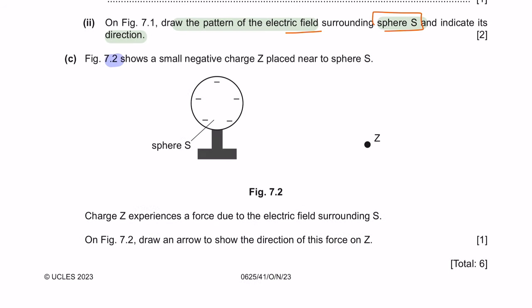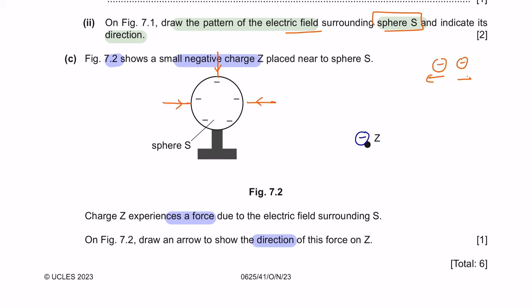Question C: Figure 7.2 shows a small negative charge Z placed near to sphere S, which is also negatively charged. Charge Z experiences a force due to the electric field surrounding S. On figure 7.2, draw an arrow to show the direction of this force on Z. Since alike charges repel each other and both are negative charges, the force acting on Z will be directed away from sphere S.